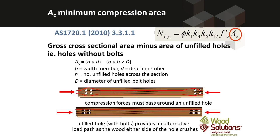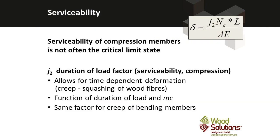The compression capacity is: phi factor times k1, k4, k6, times k12 — the buckling factor for compression members — times F'c, the compression strength, times the compression area, which is the gross area minus any unfilled holes.